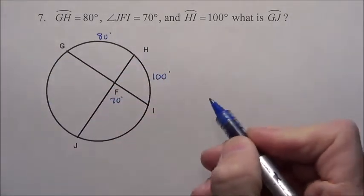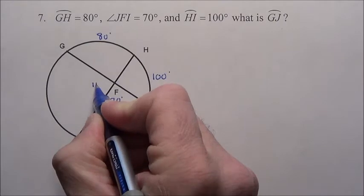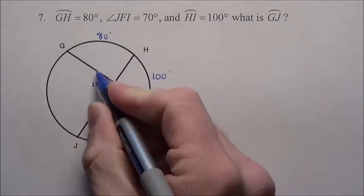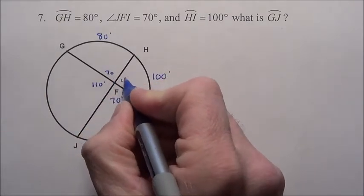What is this arc right here? Well, if this is 70 degrees, I know right here is 110 because that's a straight line, so you have 70, 110, 70, 110.